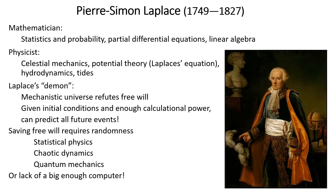Laplace also anticipated quantum mechanics, though this was before quantum theory. He recognized that saving free will would imply some extra component like randomness, so he worked on statistical physics and the ideas of chaos and dynamics. He also imagined that we might simply not have a big enough computer — mechanical calculators did exist — to calculate all future events, and so we could save free will that way.